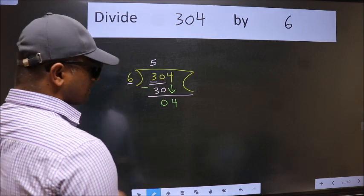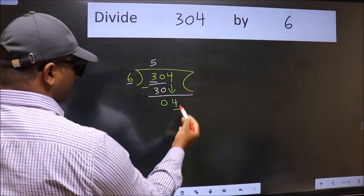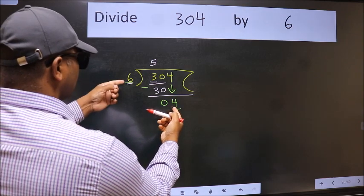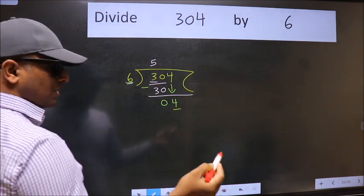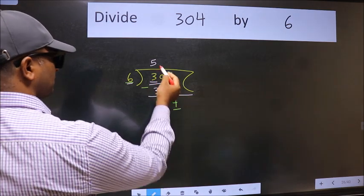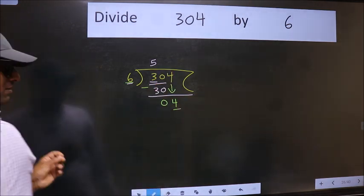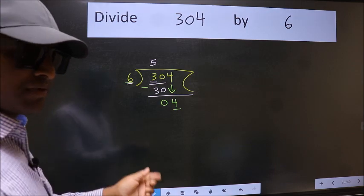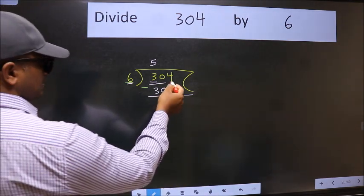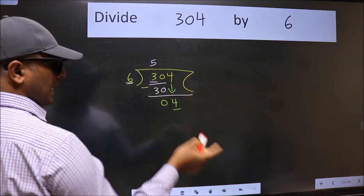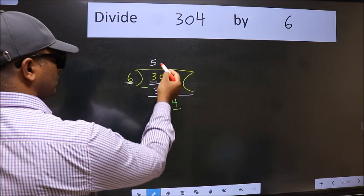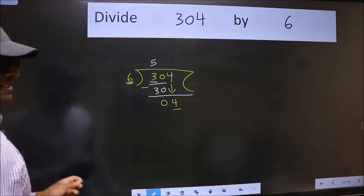And the mistake is this: Here we have 4 and here 6. 4 is smaller than 6. So what many do is they directly put a dot and take 0, which is wrong. Why is it wrong? Because you just brought this number down, and in the same step, you want to put a dot and take 0, which is wrong.